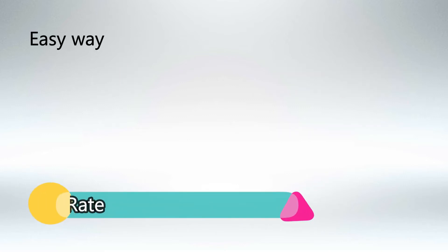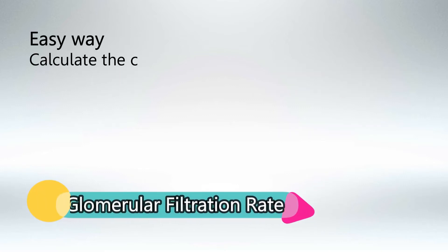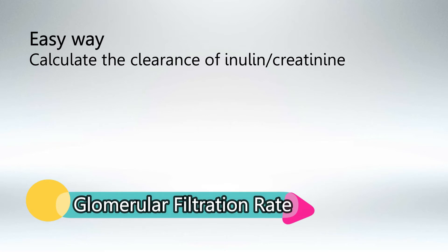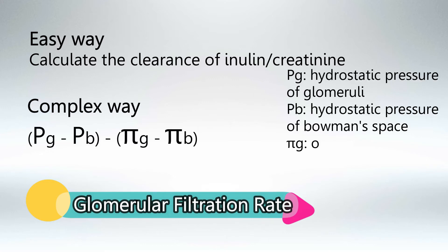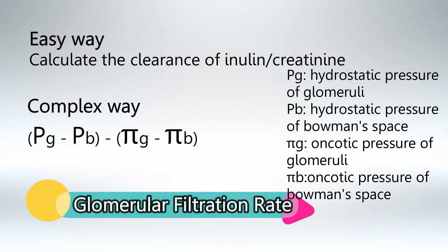To calculate GFR we have two ways. The easy way is simply calculating the clearance of inulin or creatinine. Or the more complicated way: the hydrostatic pressure difference between the glomerular capillary and Bowman's space, minus the oncotic pressure difference between the glomerular capillary and Bowman's space.